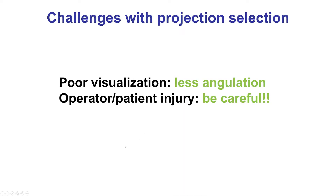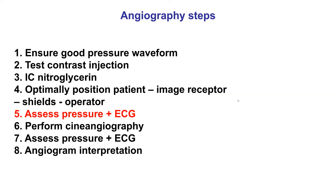In very obese patients, visualization can be challenging. In such patients, less angulation is important to obtain cleaner images. Moving the image receptor can result in injury of the operator or the patient, so the operator who moves the image intensifier should be careful about how it is moved.